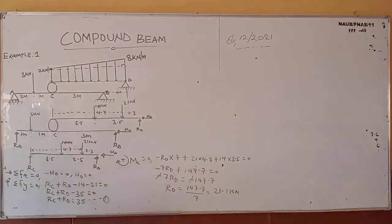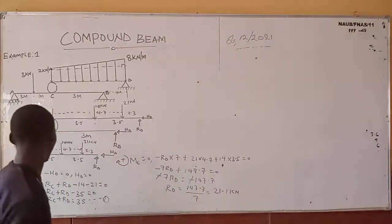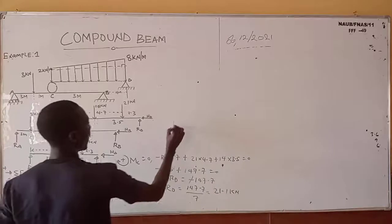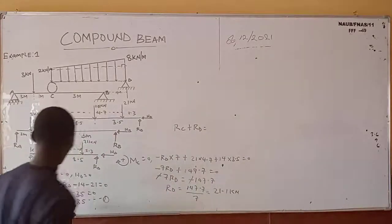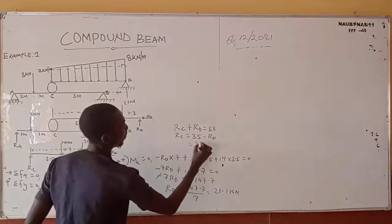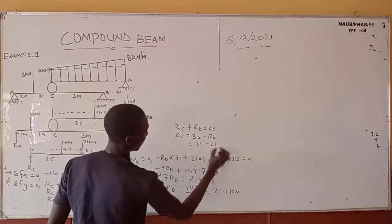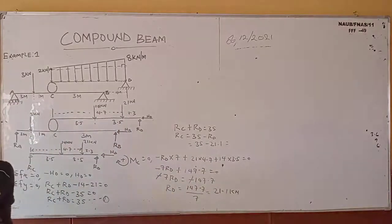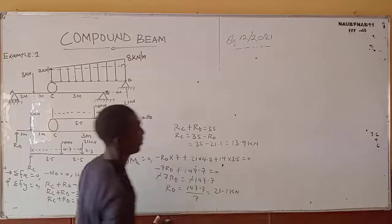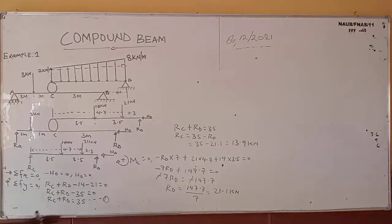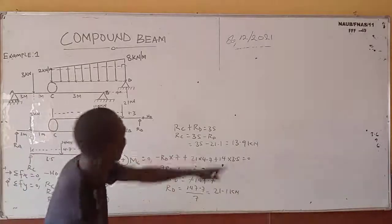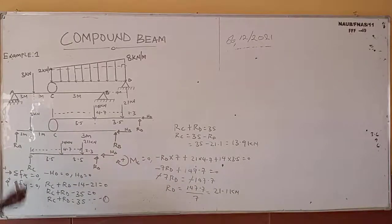Going back to equation 1: ROC plus ROD equals 35. So ROC equals 35 minus ROD, which is 35 minus 21.1, giving ROC equals 13.9 kilo-newtons. Since we got a positive answer, our assumption of upward direction for ROC is correct.